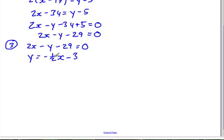So what we can do is solve by substitution, because we've already got the y isolated here. So we're going to sub in for y equals negative 1 half x minus 3. So we'll rewrite this: 2x minus, and y is going to be negative 1 half x minus 3, minus 29 equals 0.